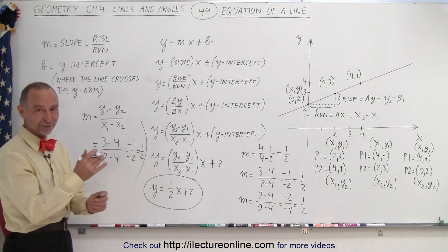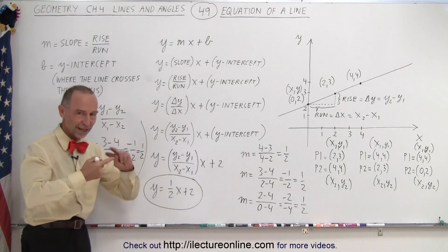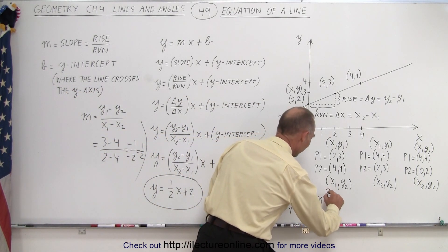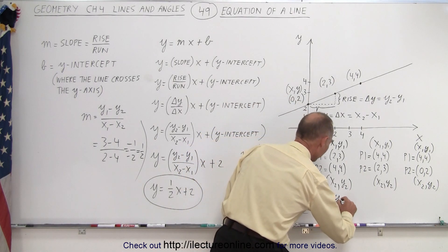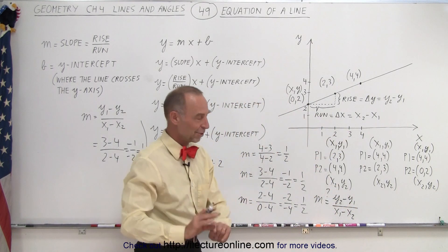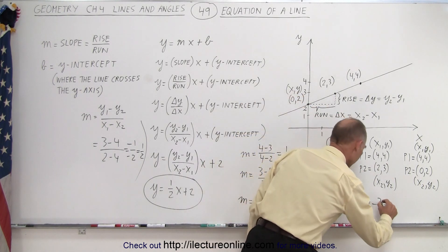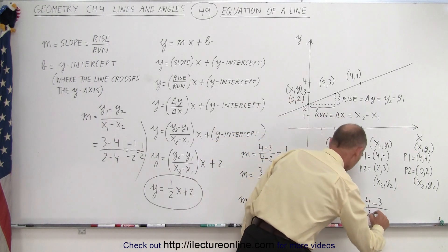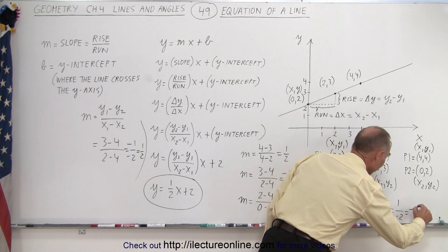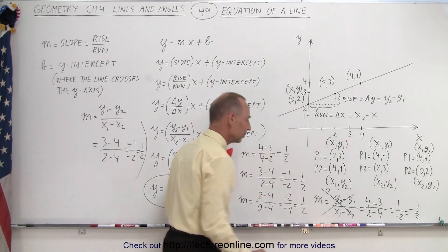Now let's show what you cannot do. What if we write y2 minus y1 divided by x1 minus x2 — mixing the order? I've already told you you shouldn't do that. So y2 minus y1 is 4 minus 3, divided by x1 minus x2 which is 2 minus 4. This gives 1 divided by negative 2, which is negative one half. You don't get the same value — so this is definitely not the right way to do it. You cannot mix them up like that.